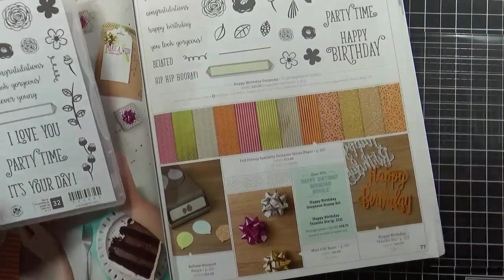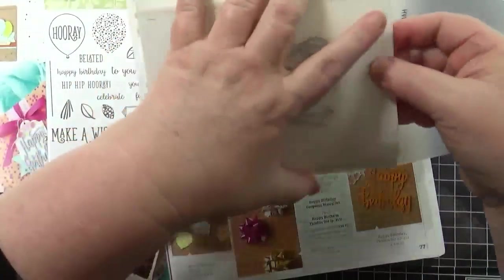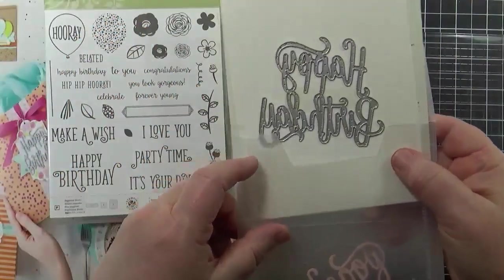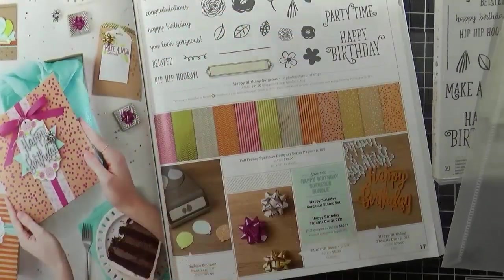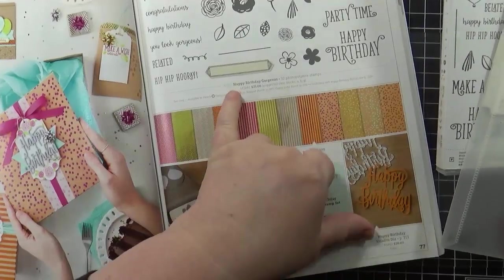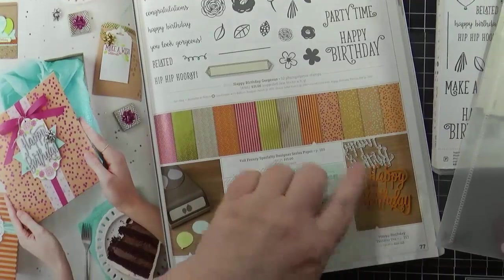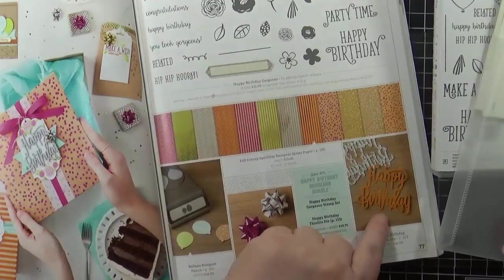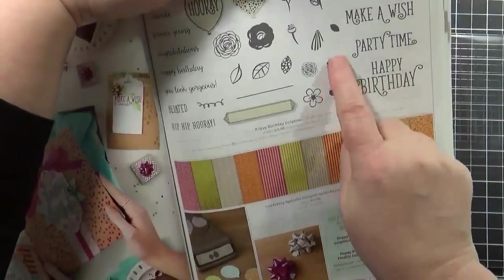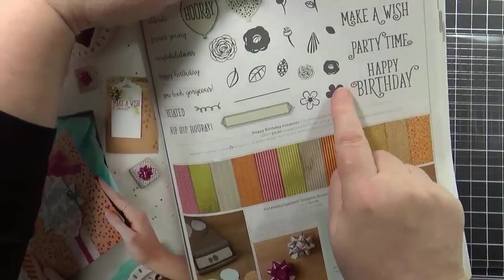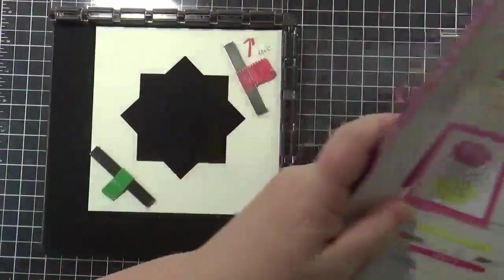But one thing I do want to point out is that currently in the current catalog that ends May 31st, it's in as a bundle meaning you could just purchase the stamp set or you could purchase the coordinating Thinlit which is called Happy Birthday, but when you buy them together as a bundle it is 10% savings. So that particular bundle savings will go away as of May 31st, so if this has been on your wish list be sure to get it sooner than later. Now the reason I picked this is because it had some smaller size flowers in it and I wanted to use this to create a larger wreath image.